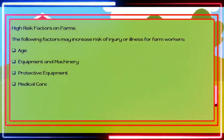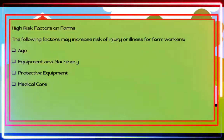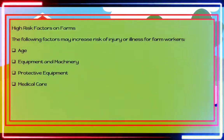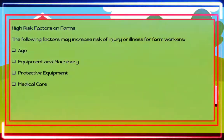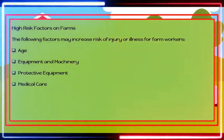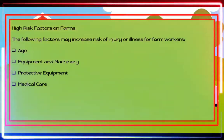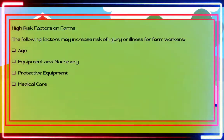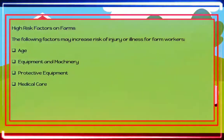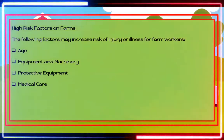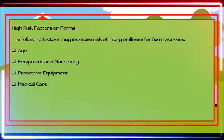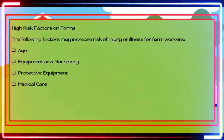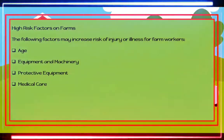High risk factors on farms: The following factors may increase risk of injury or illness for farm workers. Age: injury rates are highest among children age 15 and under and adults over 65. Equipment and machinery: most farm accidents and fatalities involve machinery. Proper machine guarding and doing equipment maintenance according to manufacturers' recommendations can help prevent accidents.